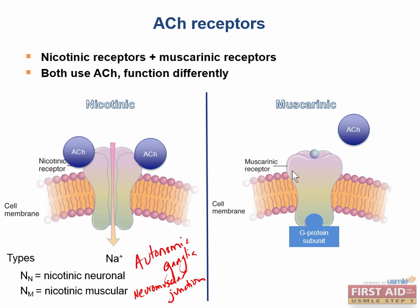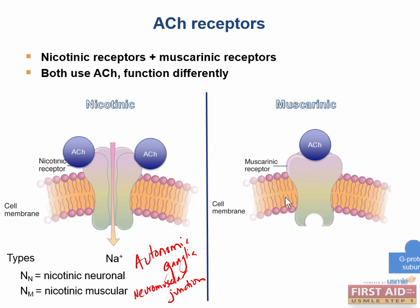When the receptor is stimulated by acetylcholine, the G protein subunit gets modified, which is going to separate it from the receptor, and it will leave and exert some sort of downstream effect. For the muscarinic receptor: acetylcholine binds, which releases the G protein subunit, and it will exert some sort of effect, which we'll cover shortly.